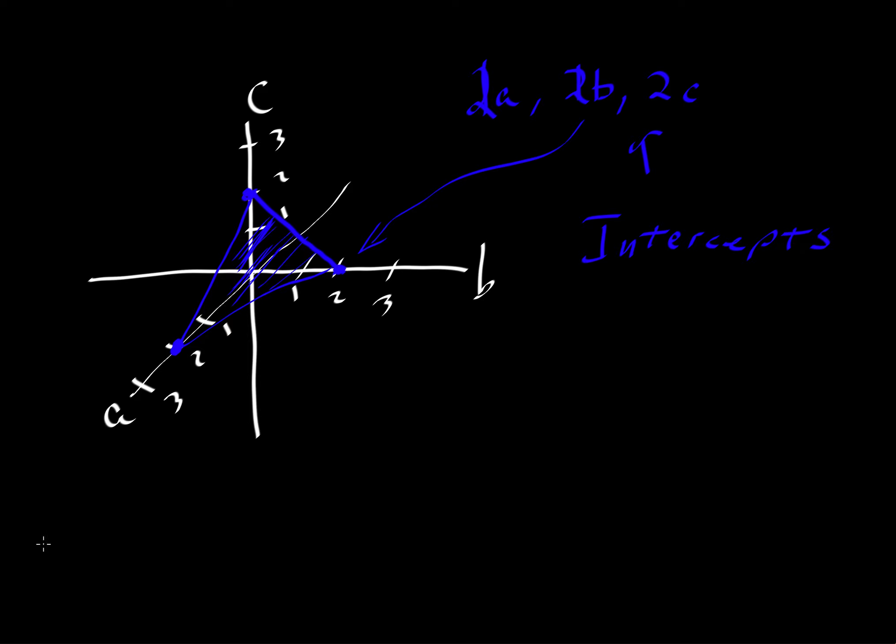So then what we will do to get the Miller indices is that we will invert those intercepts. So we will have 1 over 2, 1 over 2, and 1 over 2. So we invert, that is step 2. So step 1 we establish the intercepts, step 2 we will invert, and then in step 3 we will clear the fractions.